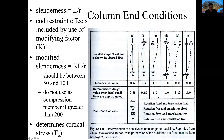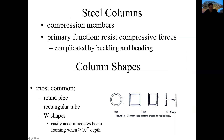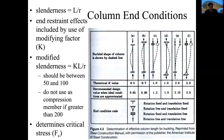There are several types of columns when we speak about steel as a material: pipe, tube, W shapes, et cetera. We will be doing calculations for W columns, which are similar to I-beams.